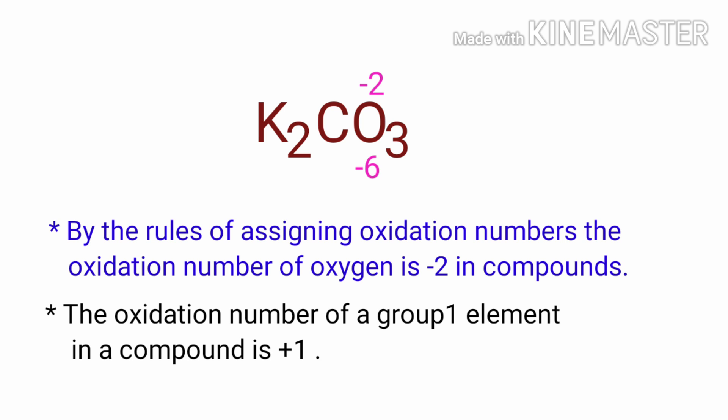The oxidation number of a group one element in a compound is plus one. Potassium is a group one element, so the oxidation number of potassium is plus one.